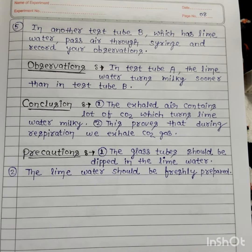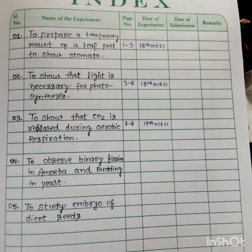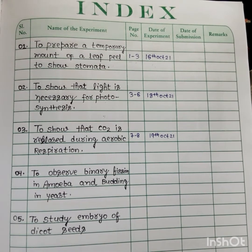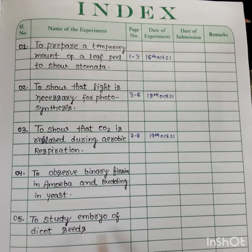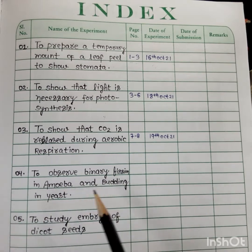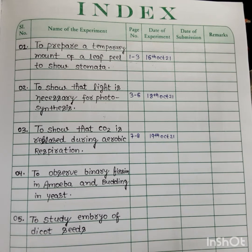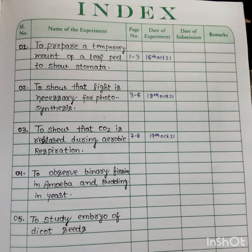Today we have done three experiments related to your syllabus: first, temporary mount of leaf peel to show stomata; second, light is necessary for photosynthesis; third, CO2 is released during aerobic respiration. I have written in my way — you can write in your own way, taking help from these experiments. The words can be similar or different. Two more experiments you have to write yourself: to observe binary fission in amoeba and budding in yeast; and to study embryo of dicot seeds. For each, you need to write: aim, apparatus and chemicals, theory, procedure, observation, conclusion, and precautions. Binary fission is a process of asexual reproduction that happens in amoeba, and budding in yeast. For dicot seeds, there are two types of seeds — monocot and dicot — dicot examples include pea.